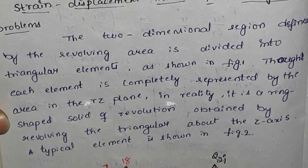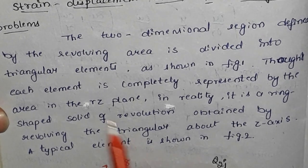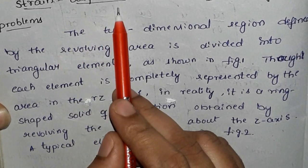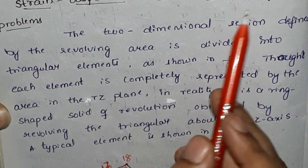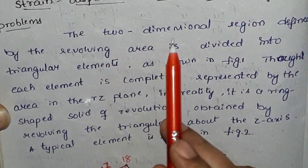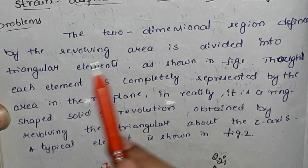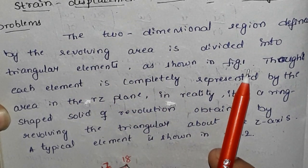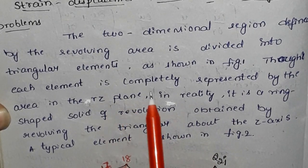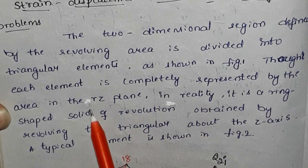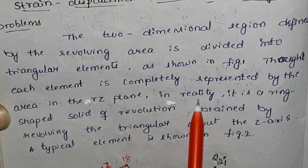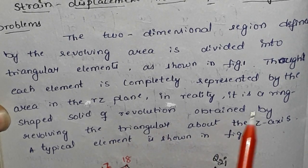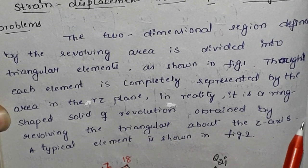Welcome back to our channel. Here we discuss the strain displacement matrix for axisymmetric problems. In axisymmetric analysis, the two-dimensional region is defined by revolving an area. This region is divided into triangular elements as shown in the figure. Each element is completely represented by the area in the RZ plane and is a ring-shaped solid of revolution obtained by revolving the triangle about the Z axis.